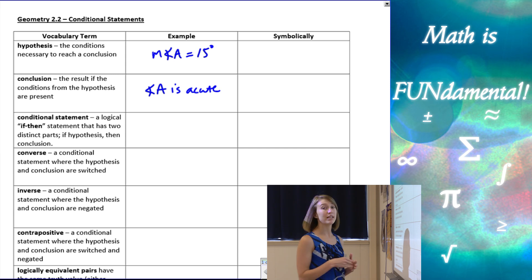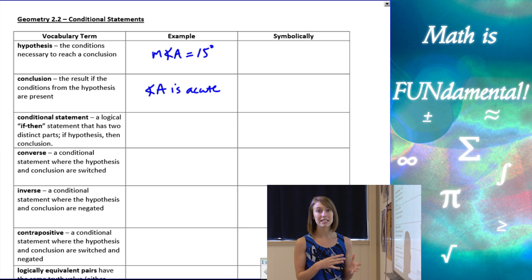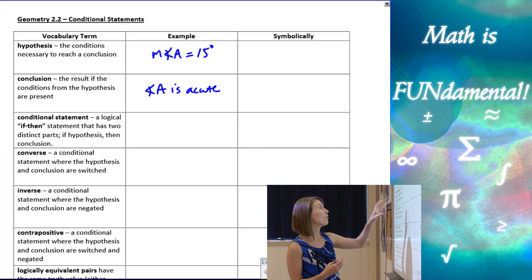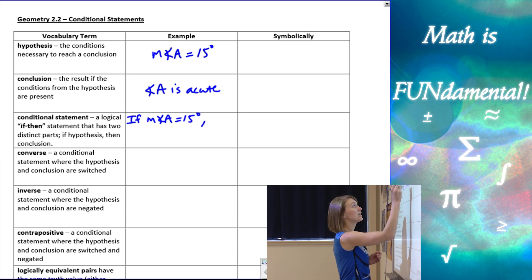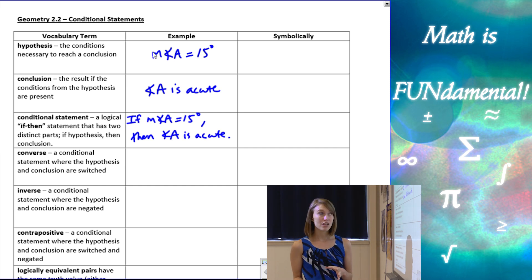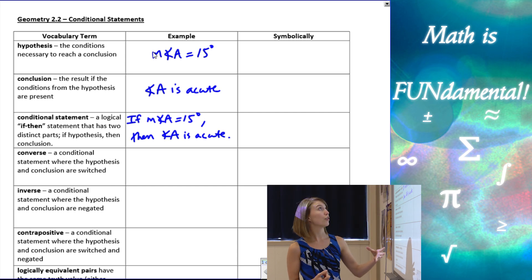So now we get into new things. A conditional statement is a logical statement in the form 'if... then.' It always is: if the hypothesis, then the conclusion. Using our same example: if the measure of angle A is 15 degrees, then angle A is acute. It's an if-then statement using our hypothesis and then the conclusion.